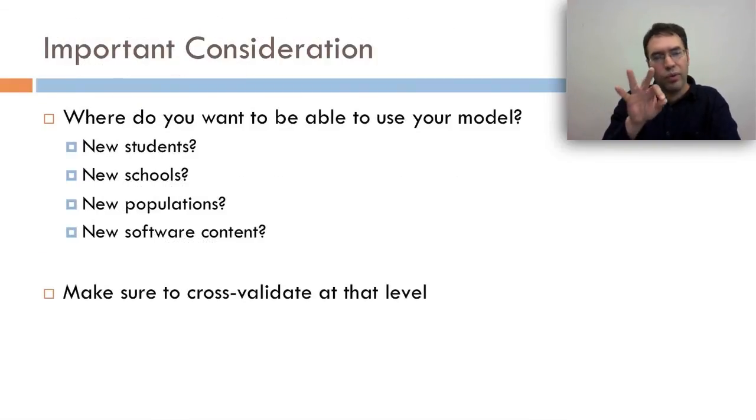The important consideration is, where do you want to be able to use your model? Do you want to be able to use your model on new students? On new schools? On new populations? Or on new software content? However you want your model to generalize, be sure to cross-validate at that level. Because if you don't and you ignore this issue, you might have a model that doesn't work nearly as well as you think it does in the case you're using it. And that's a problem.